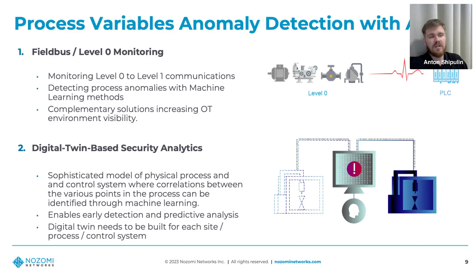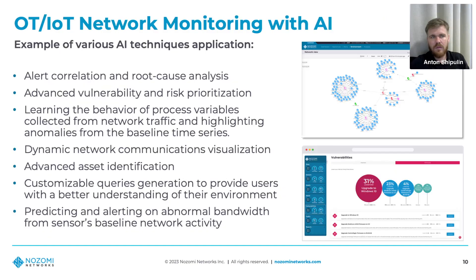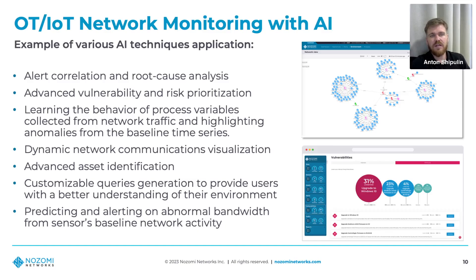These solutions are complementary methods to OT cybersecurity but still don't get much mind share in the industry. The most effective AI and ML-based OT security technology today is OT network security monitoring, covering use cases such as alert correlation and root cause analysis, advanced vulnerability and risk prioritization, learning process variable behavior from network traffic and highlighting baseline anomalies, dynamic network communication visualization, and advanced asset identification.